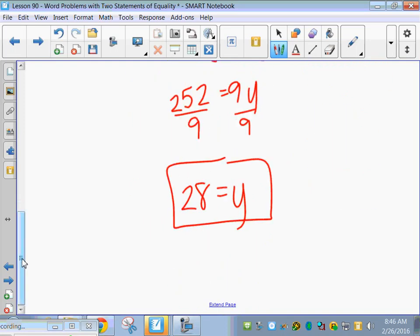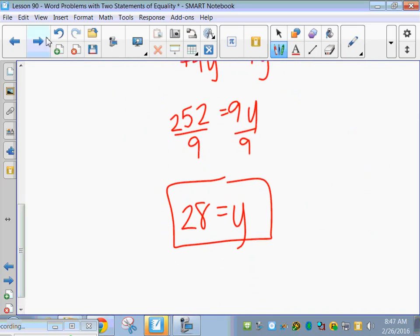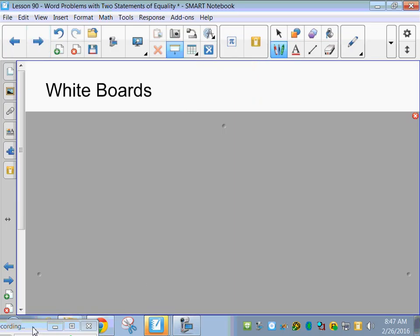Let's make sure that reduces to what we said. We said if x is 35 and y is 28, what number goes into both of those? So does that reduce to 5 fourths? Yep. And do those numbers add to 63? Yeah. Let's try it on the whiteboards.